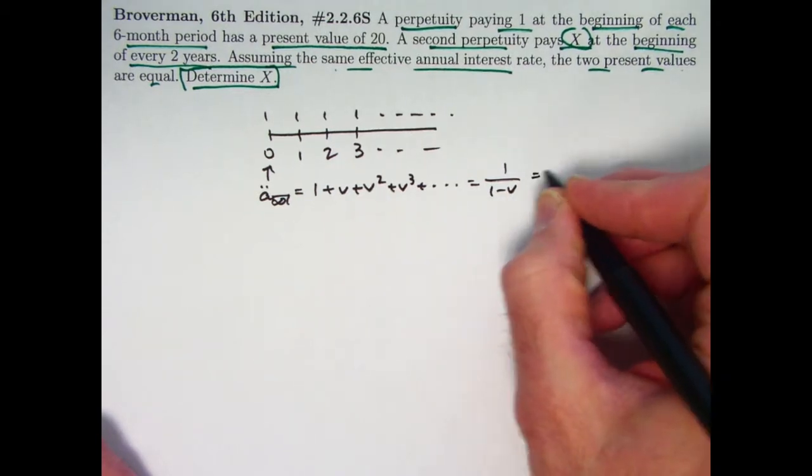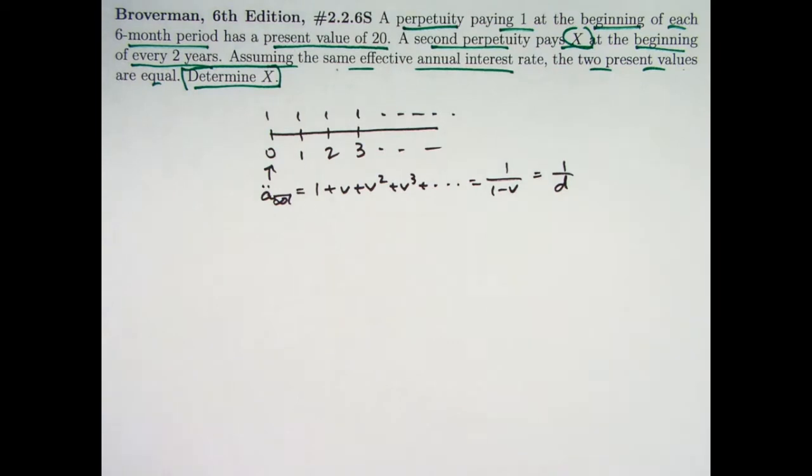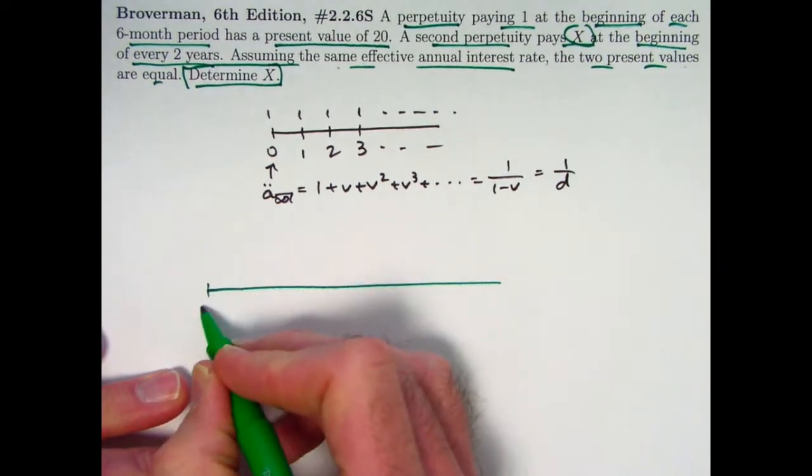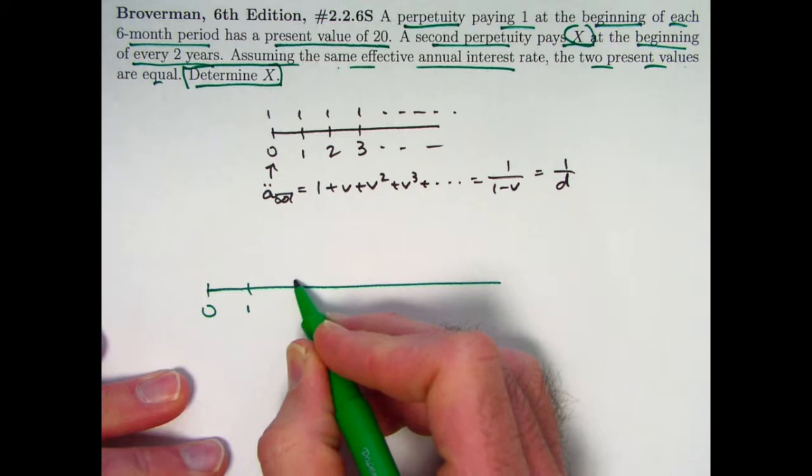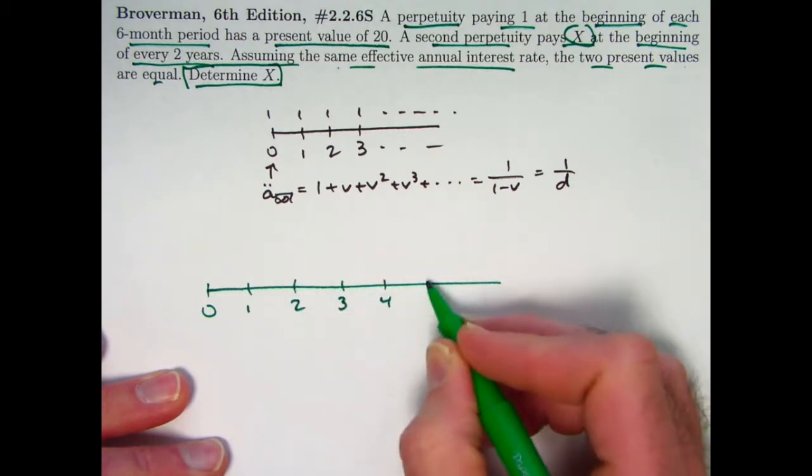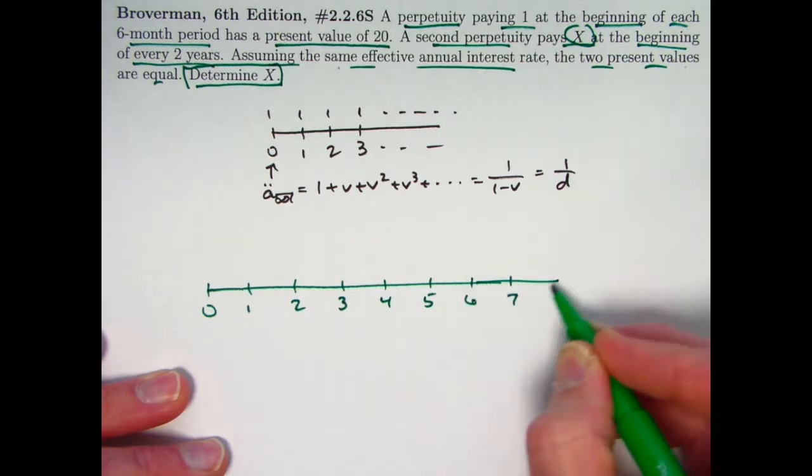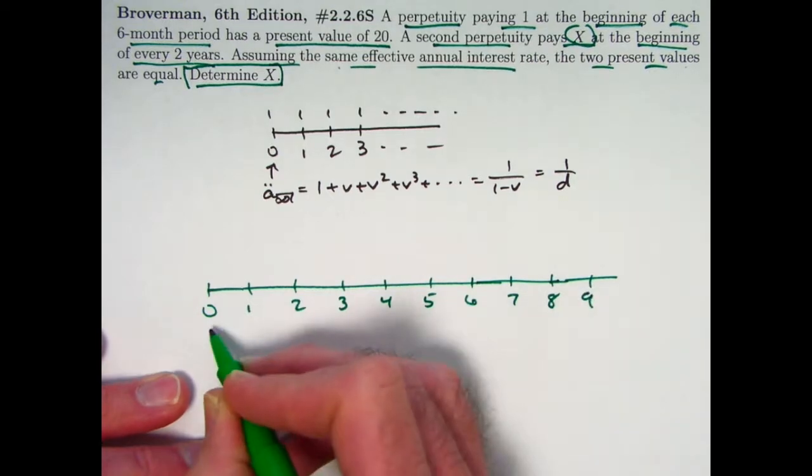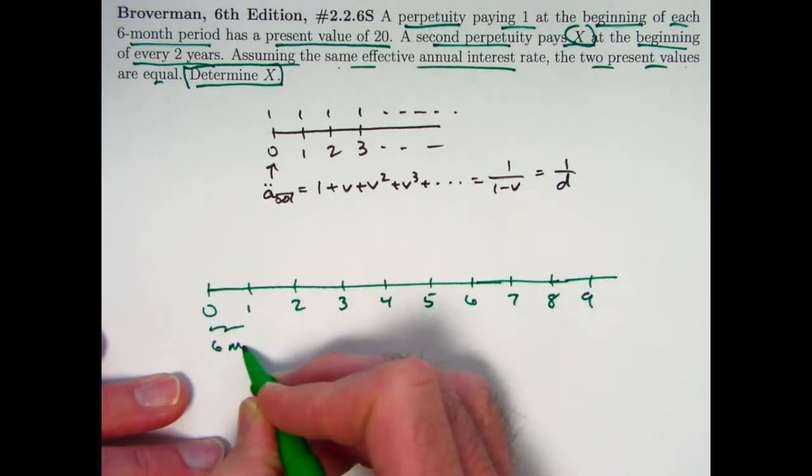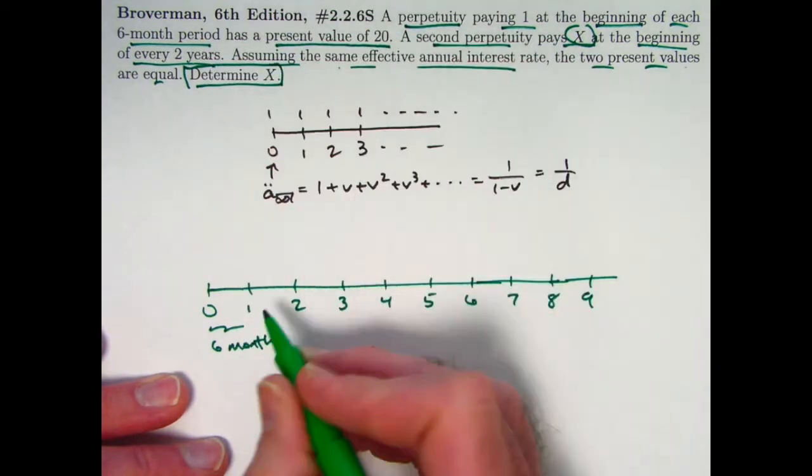So there's the generic situation. Now let's look at our situation in the problem, one of which does have payments of 1 so it'll be not exactly analogous to what we have there in the generic situation. All right, I'm labeling the timeline with these numbers. I'm going to think of these things as being six-month periods because the first option has payments every six months.